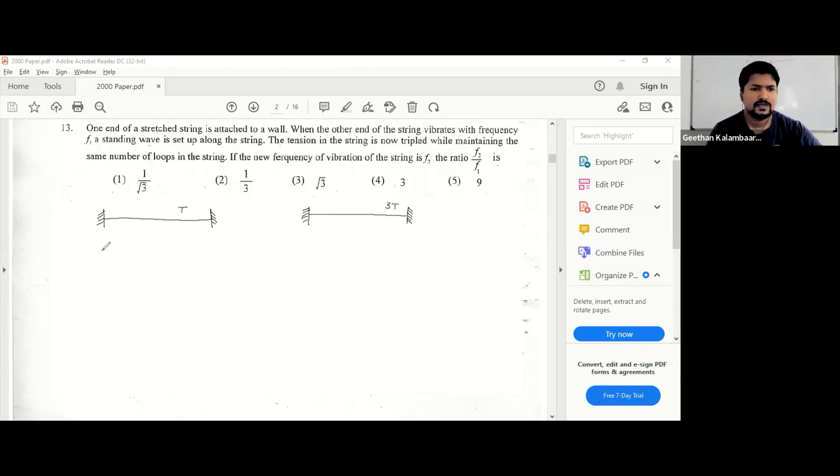So the equation that you can use for this is fn is equal to - what is it - fn is equal to n plus 1 into v over 2l.